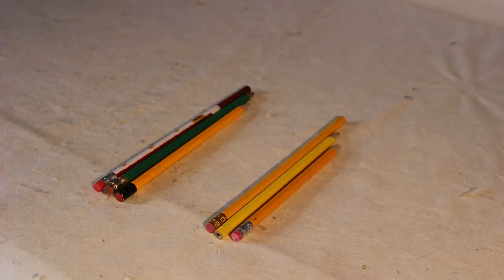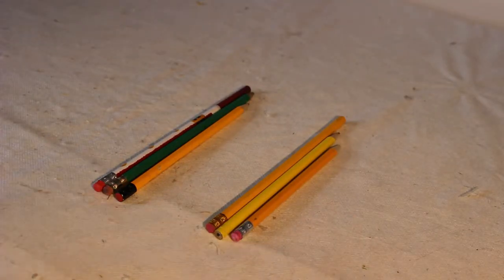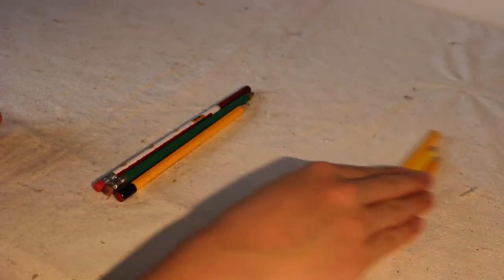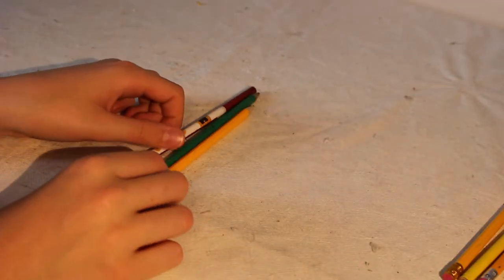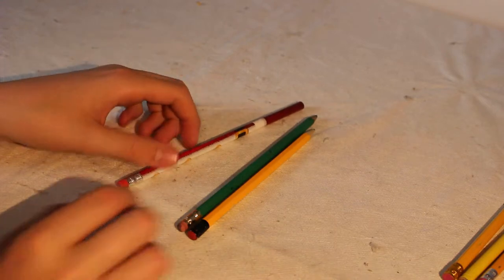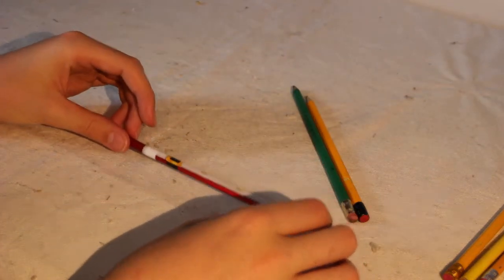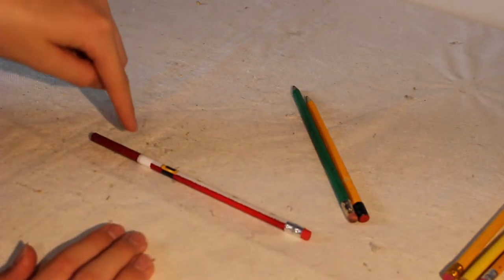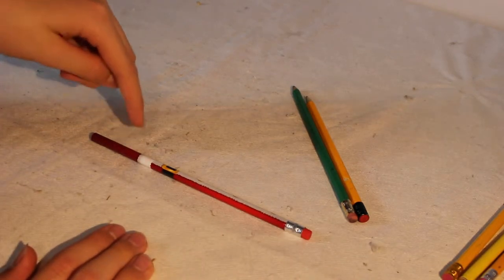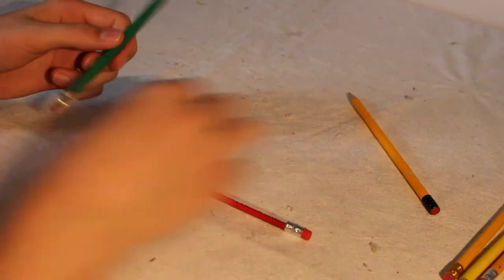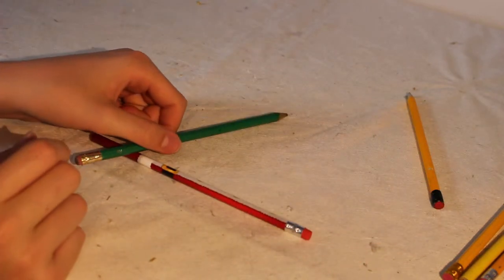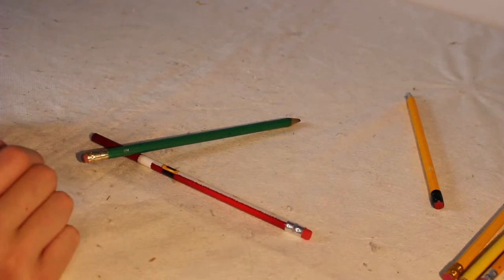Each of these piles will be one of the triangles that are on the end of the stand. So just put one pile aside for now and we're going to make one triangle. First choose the longest one. This is going to go at the bottom of the triangle and your phone or book will rest on this. Then take the second longest and place it over the top like that.